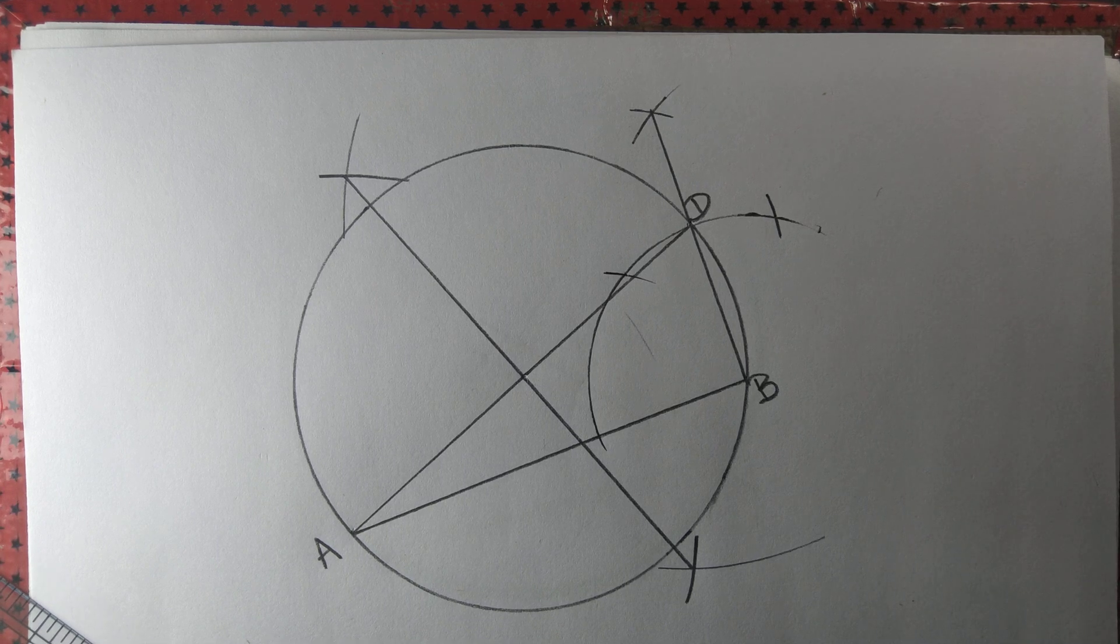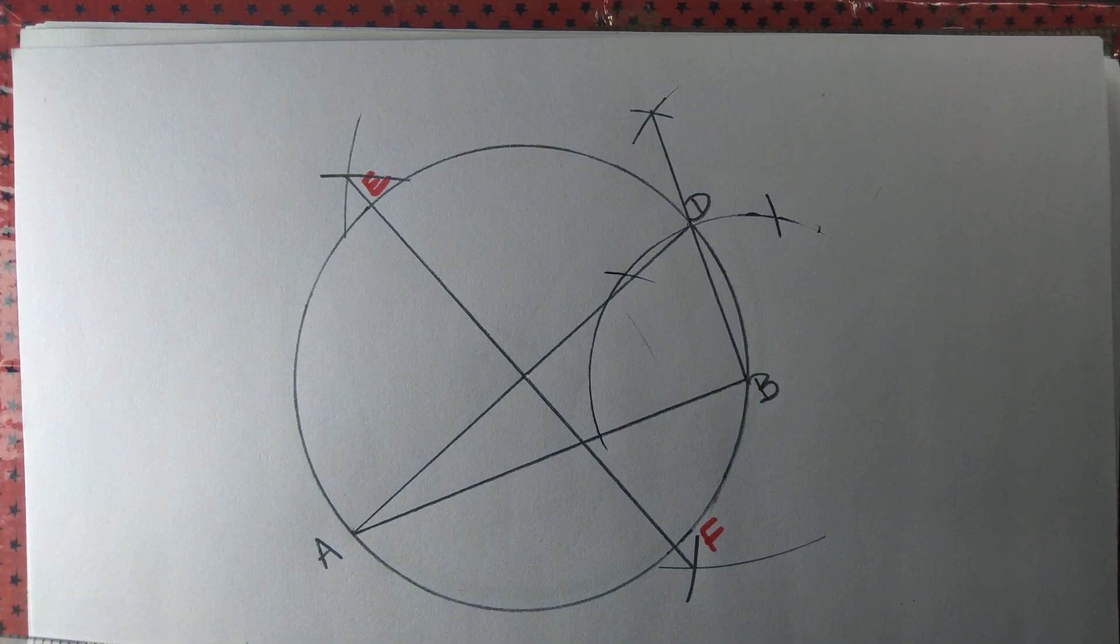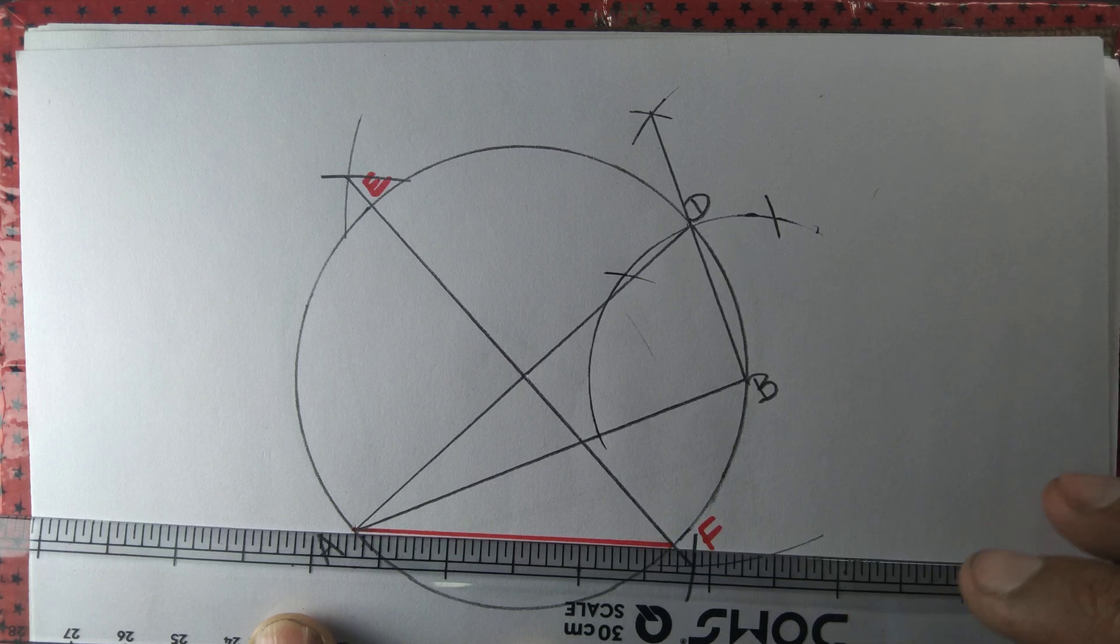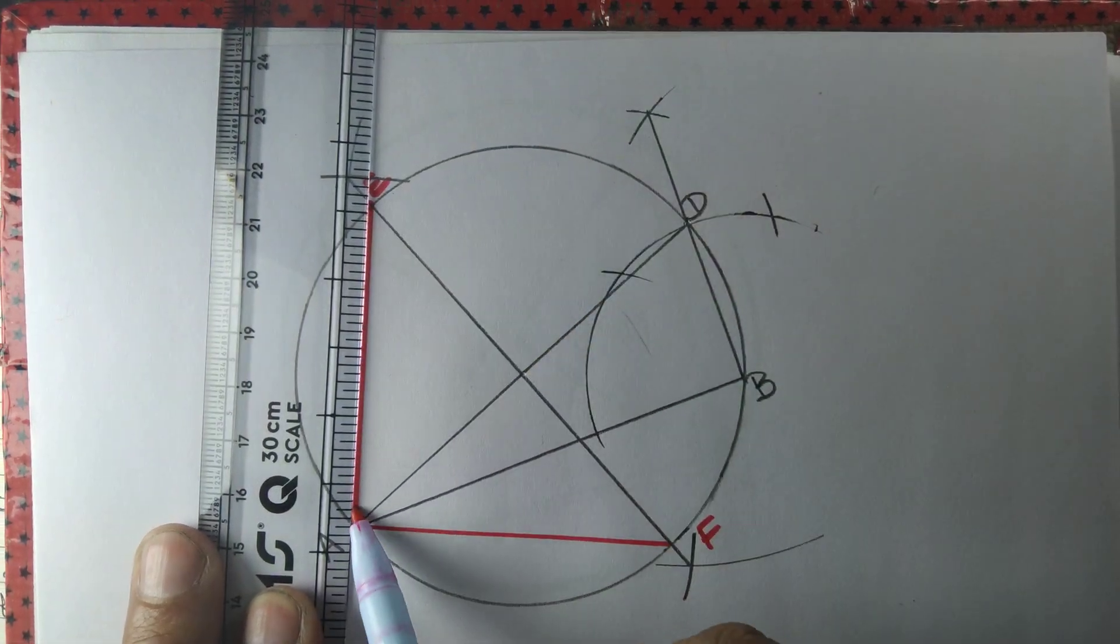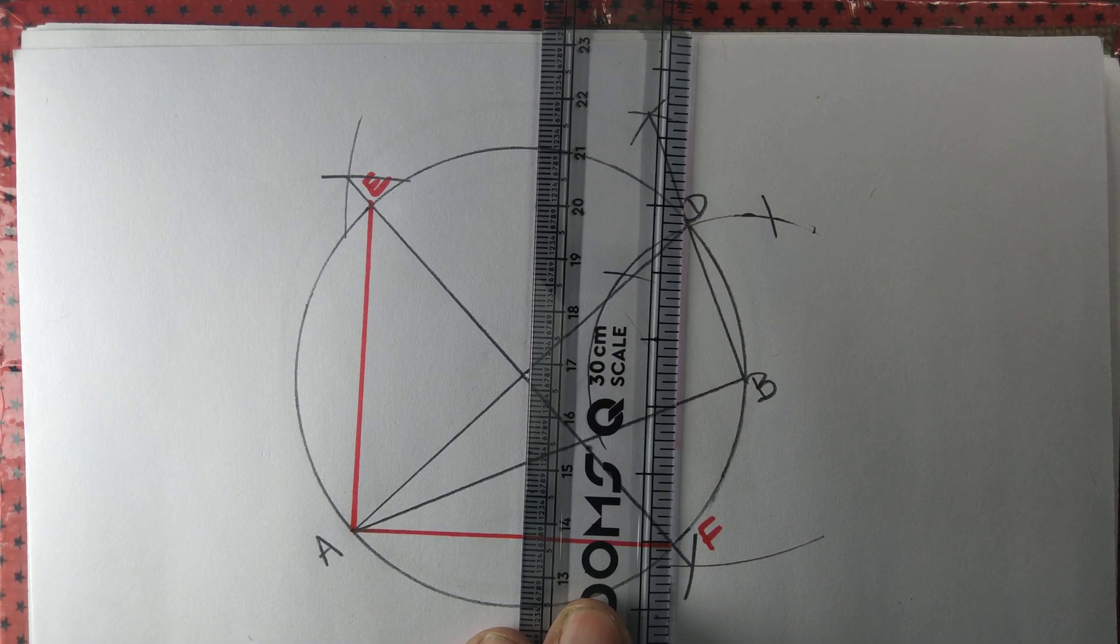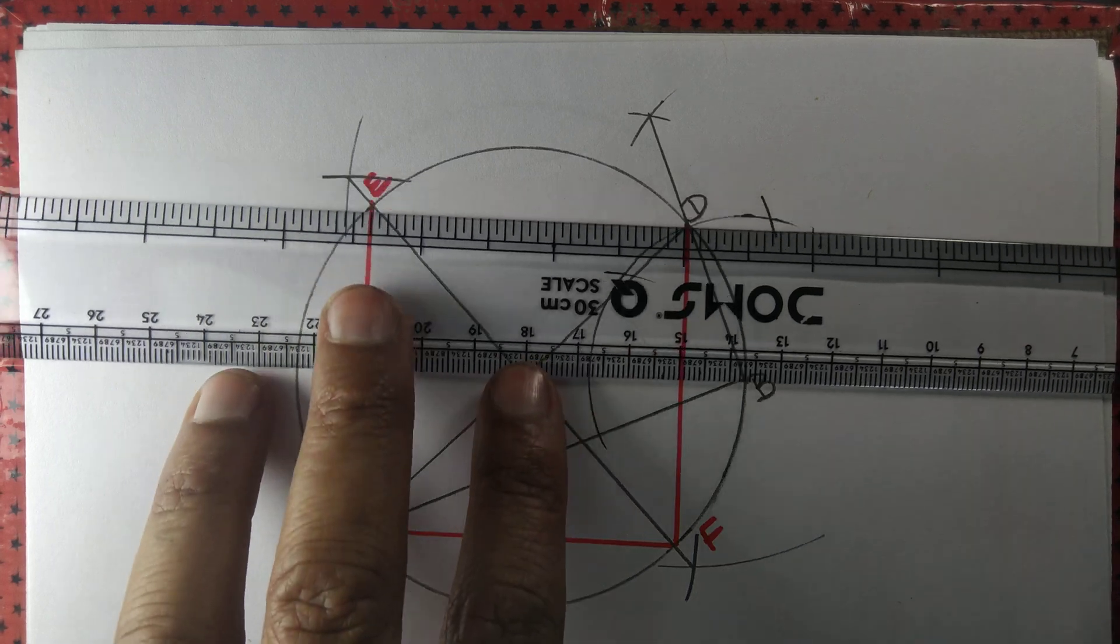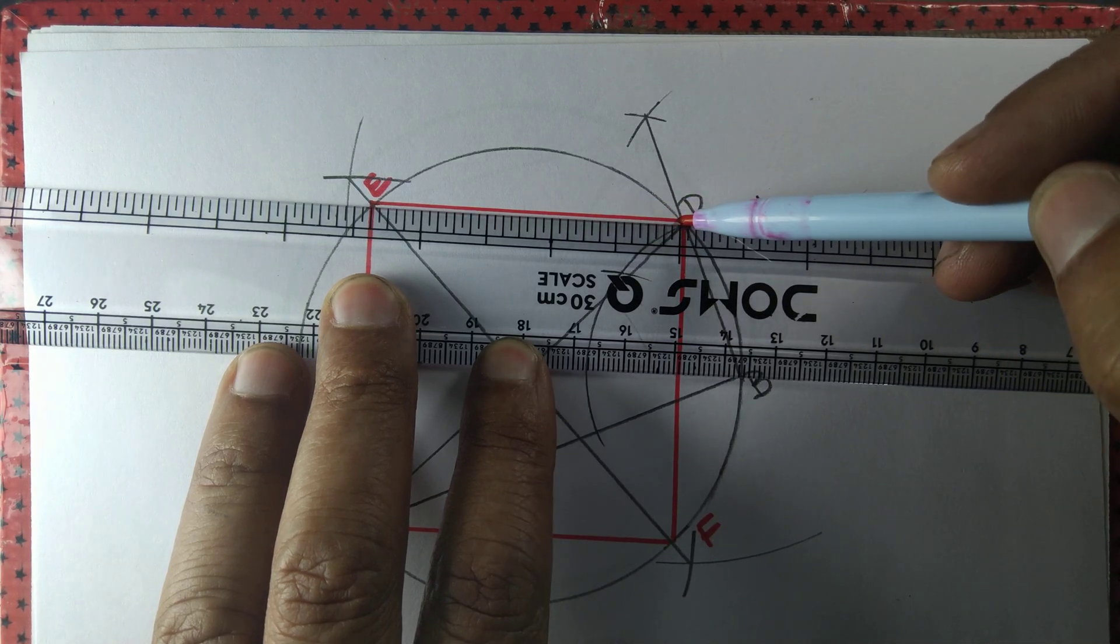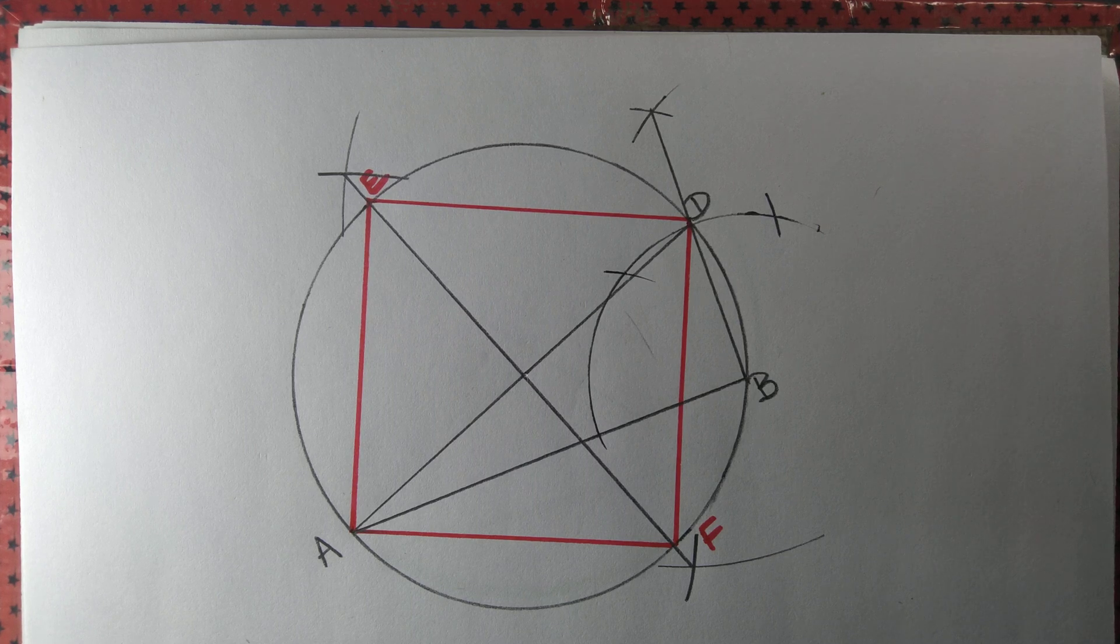The line will intersect the circle at some points, say E and F. Let us join AF, EF, and then AE. Basically, EF acts as the diameter that is perpendicular to the diameter AD. So we have AFED, that's a square that exactly fits inside the given circle.